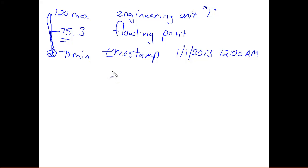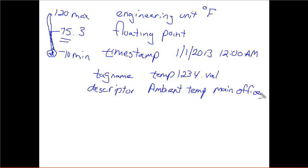So those are all the kind of metadata type information that I would have. I might give this a tag name. So it might be temp1234.value or something like that. So that's how I would tell this temperature from any other temperature. And I might have a descriptor. And that could be, whatever, ambient temperature, ambient temp, main office or something like that. So maybe I've just got a little thermometer outside my main office. I want to know what the ambient temp is. So I've created a tag for that. So that's all my tag information.